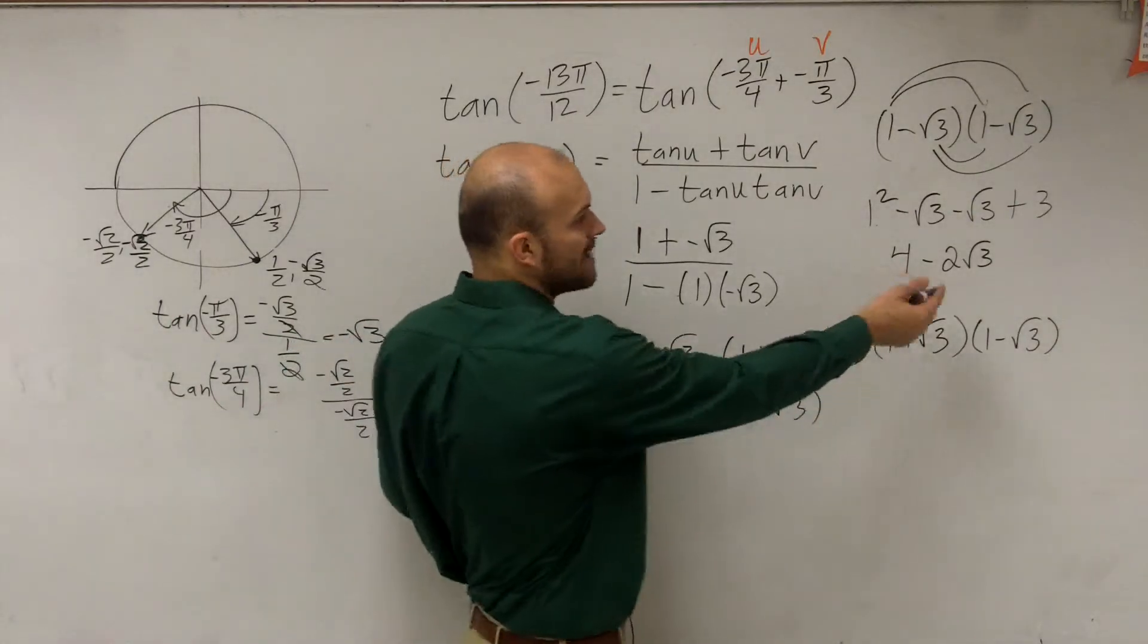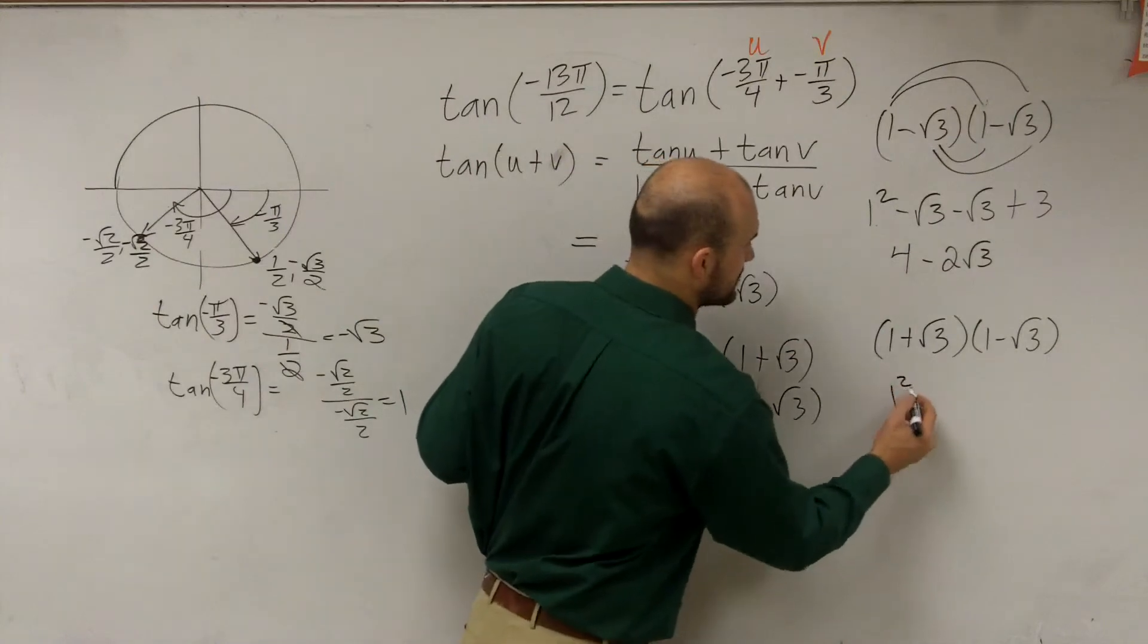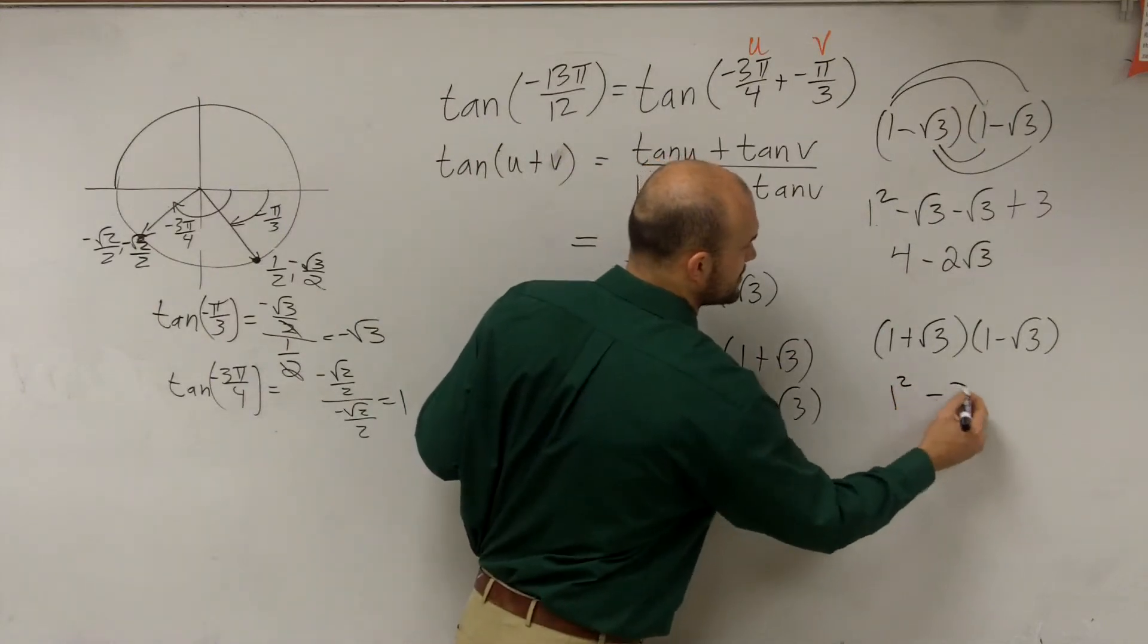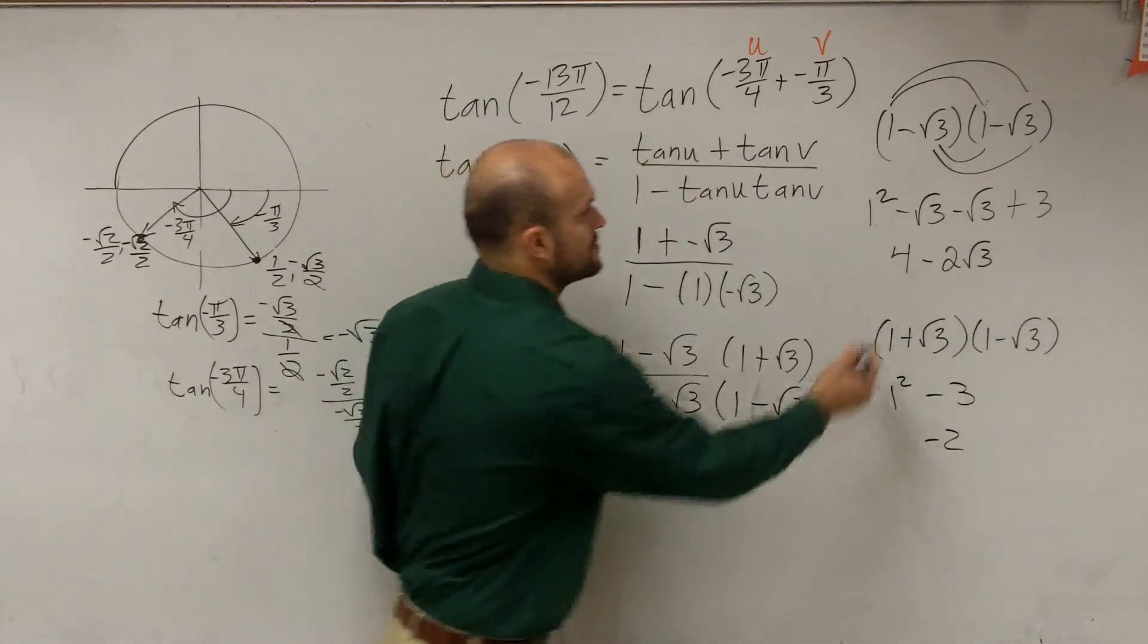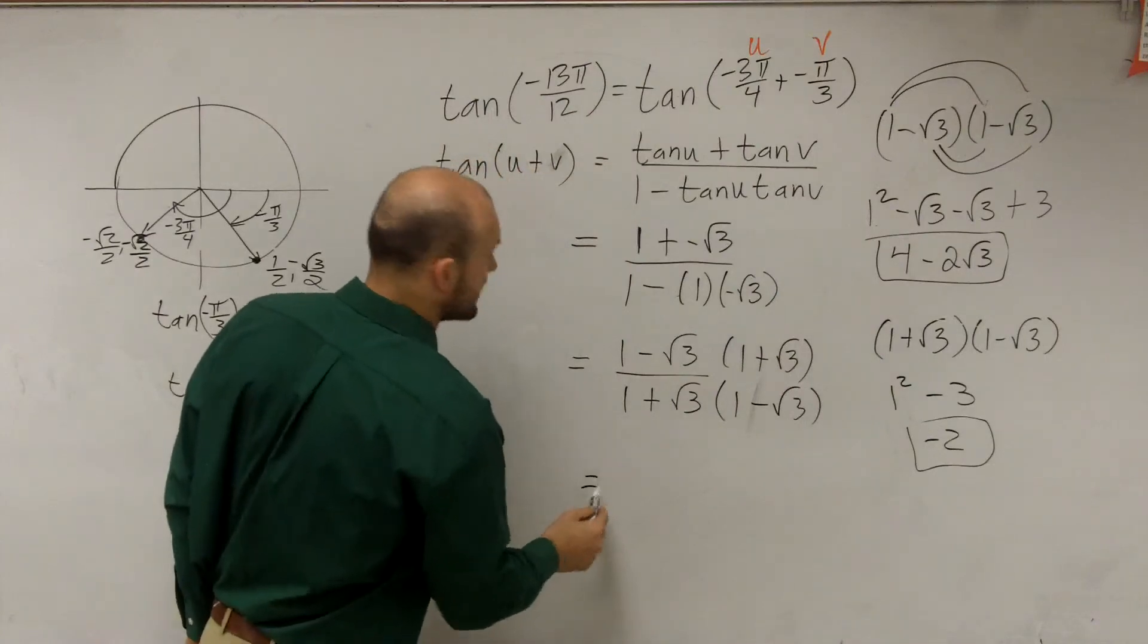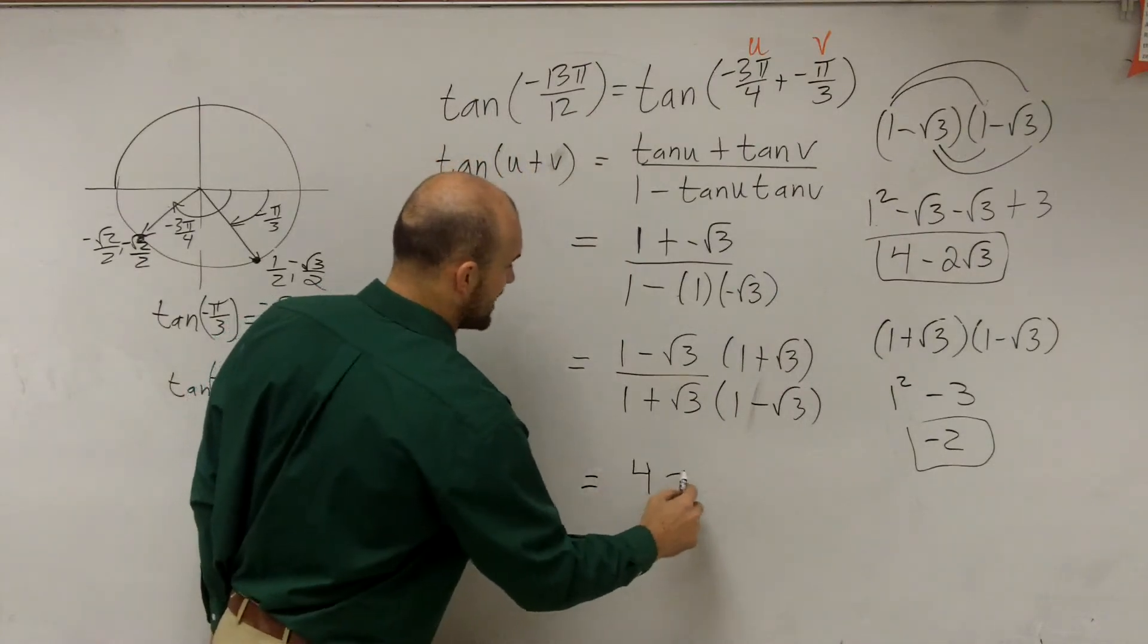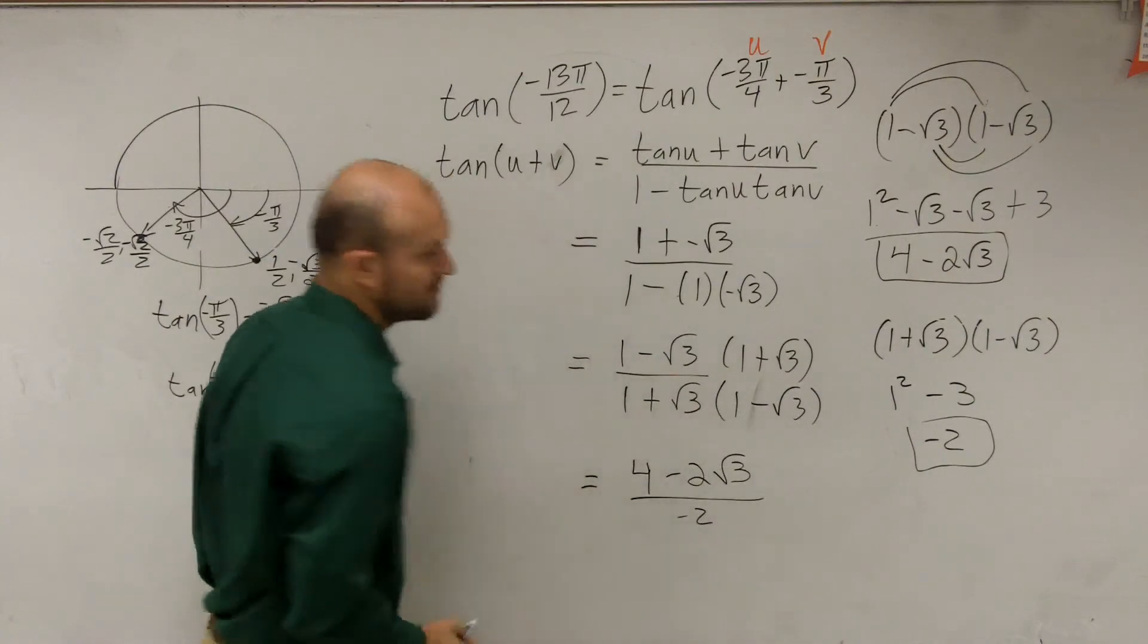This is a difference of two squares. So instead of doing first, outer, inner, last, we can just square our first two terms and square the last two terms, which equals negative 2. By multiplying the numerator and denominator, I now have 4 minus 2 square root of 3 divided by negative 2.